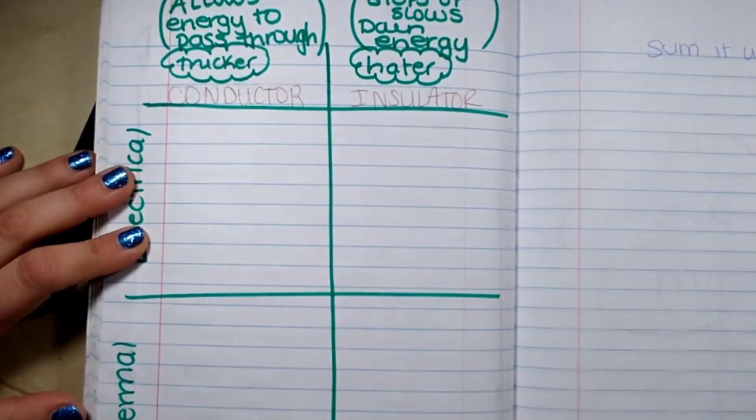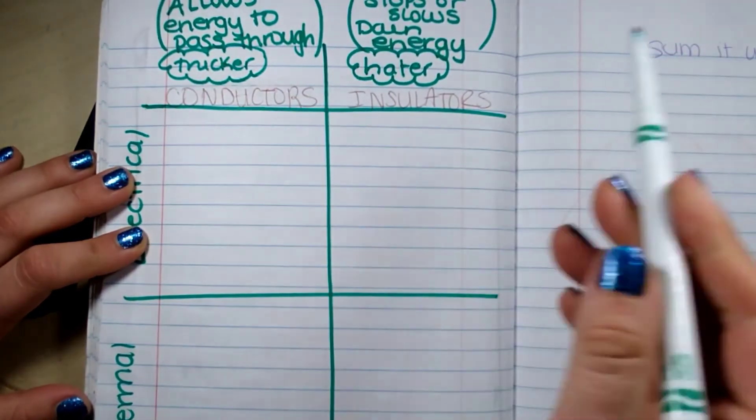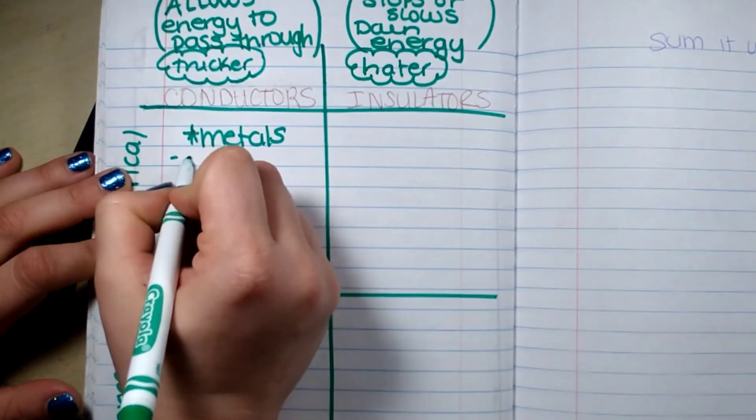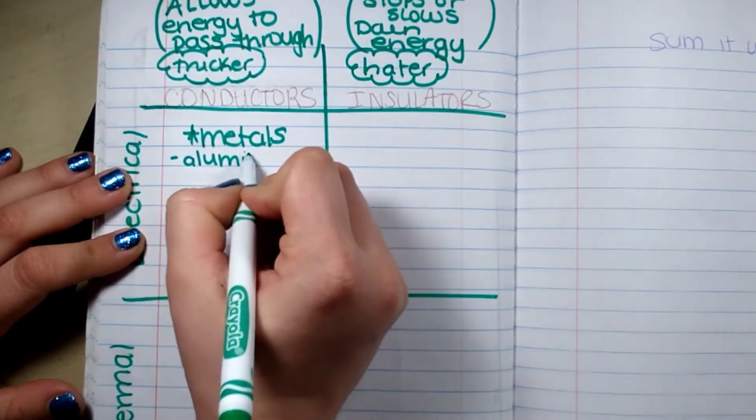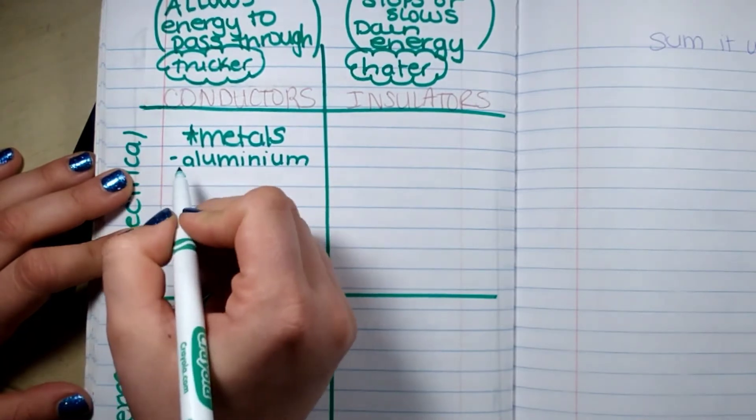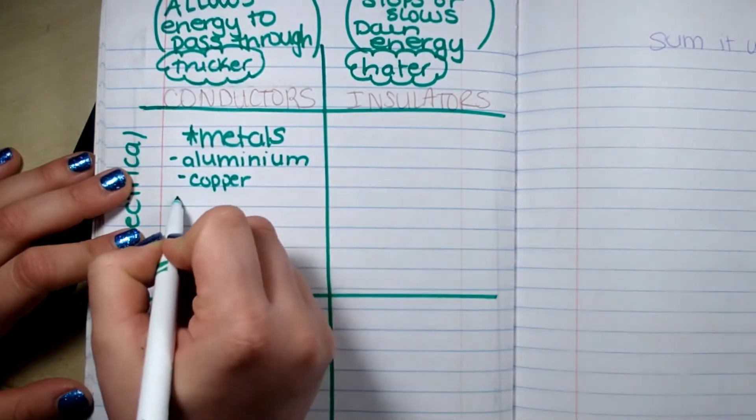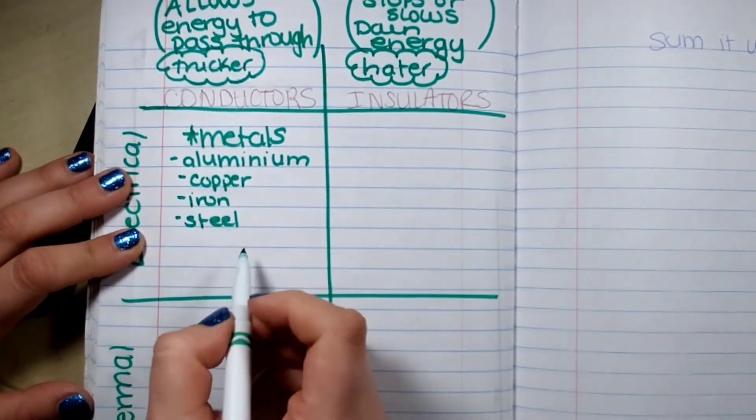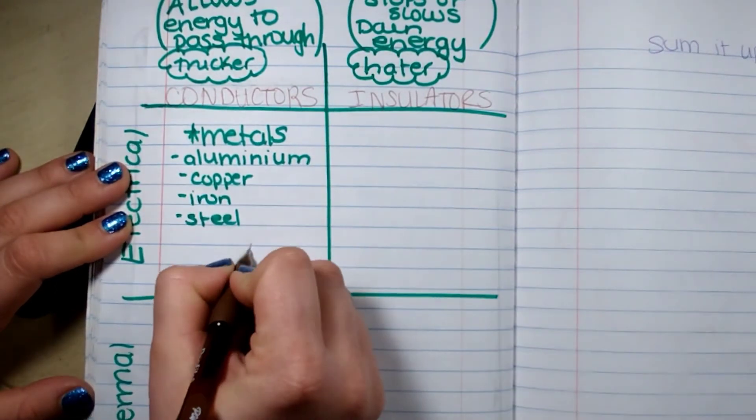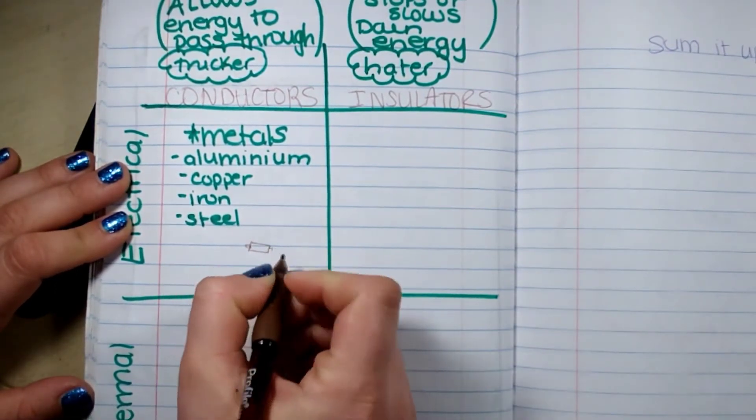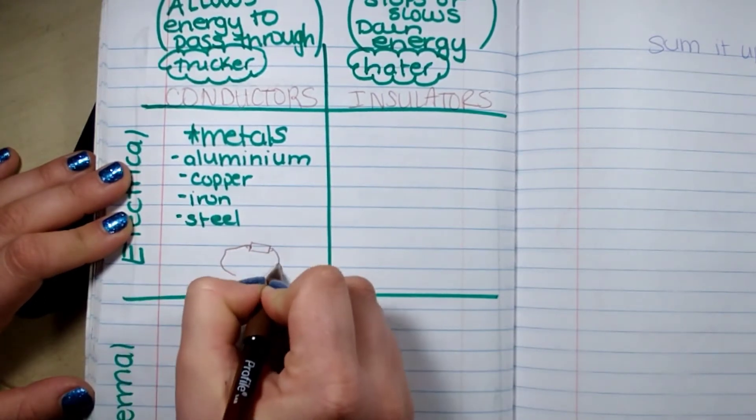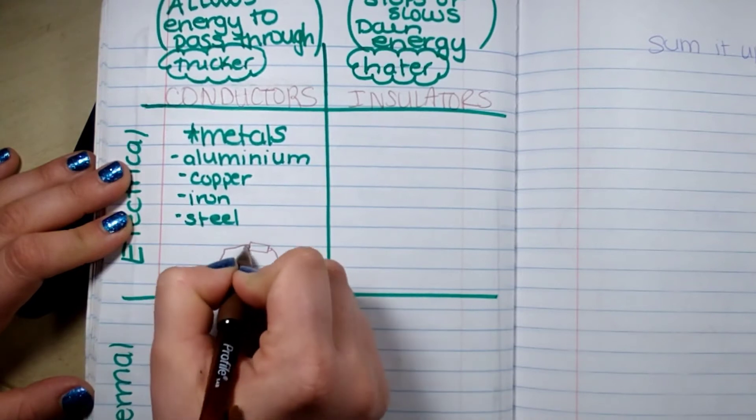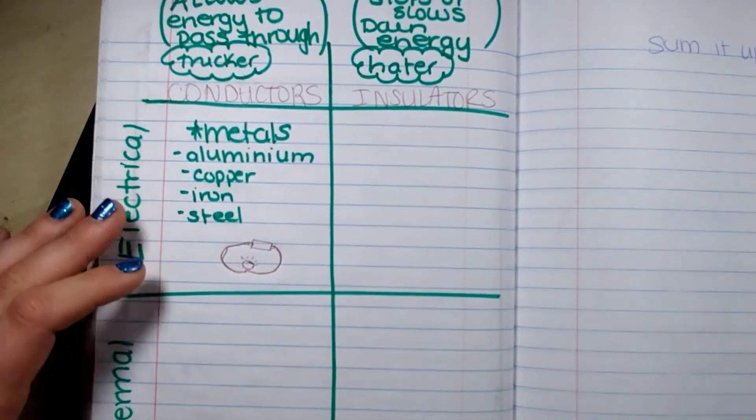So here are some conductors and some insulators. We have metals. Metals conduct electricity, like aluminum, copper, iron, steel. And a lot of times they are used in a circuit, like we've learned, to help electricity flow through - that's supposed to be a light bulb - to turn on the light bulb. So electricity can flow through the conductors easily and turn on the light bulb.